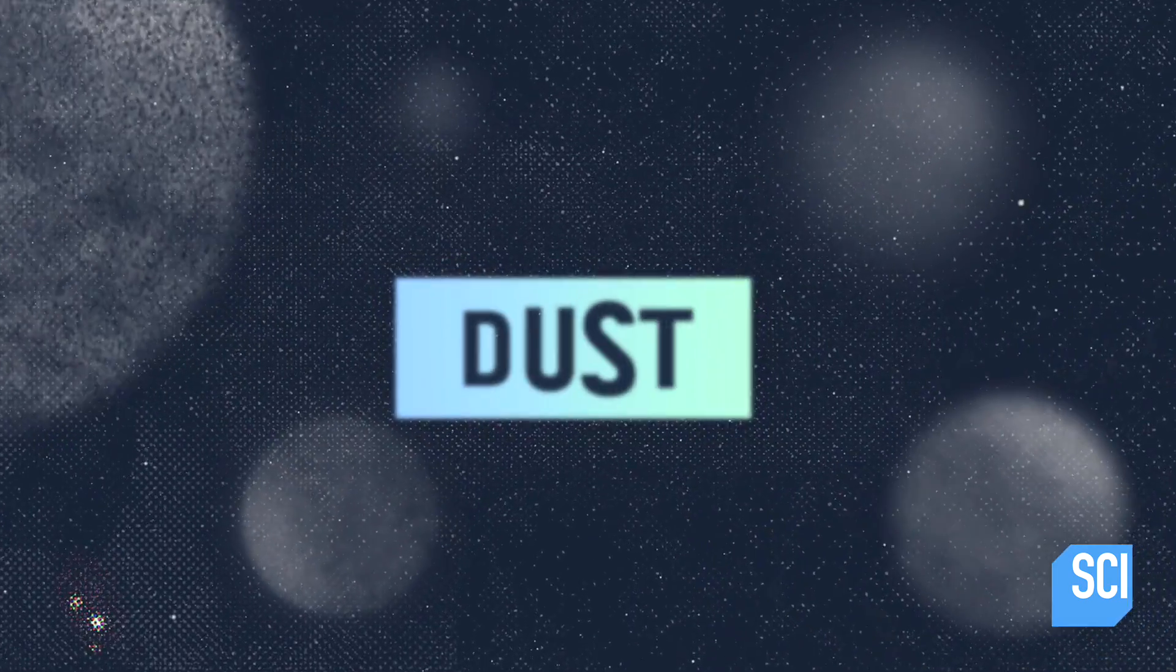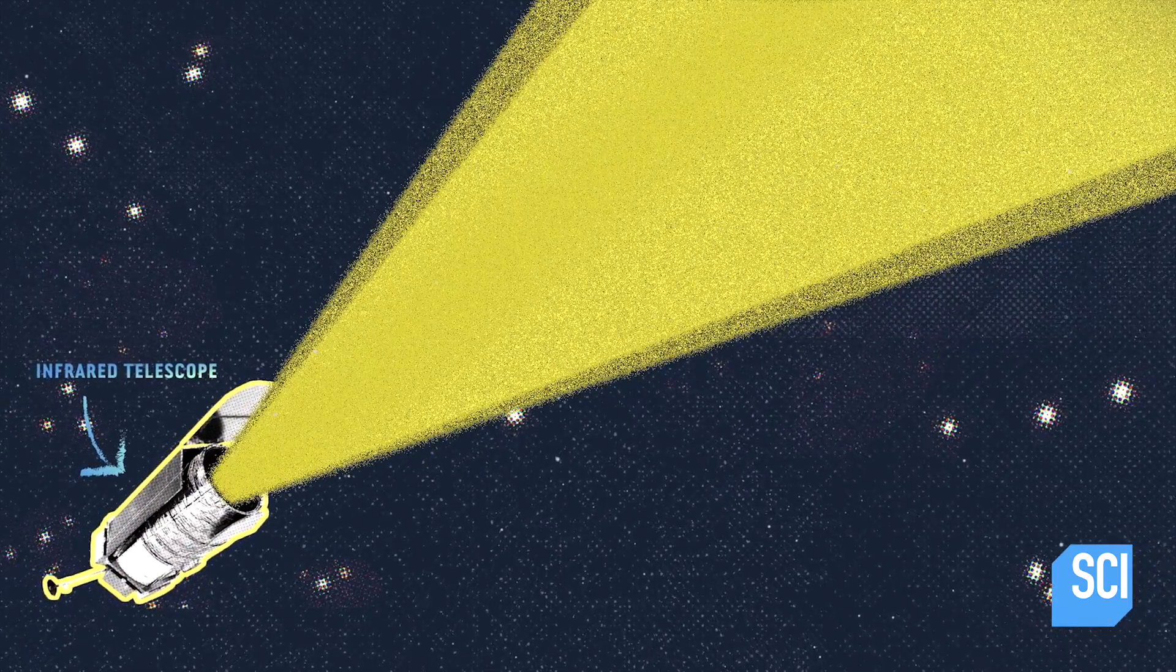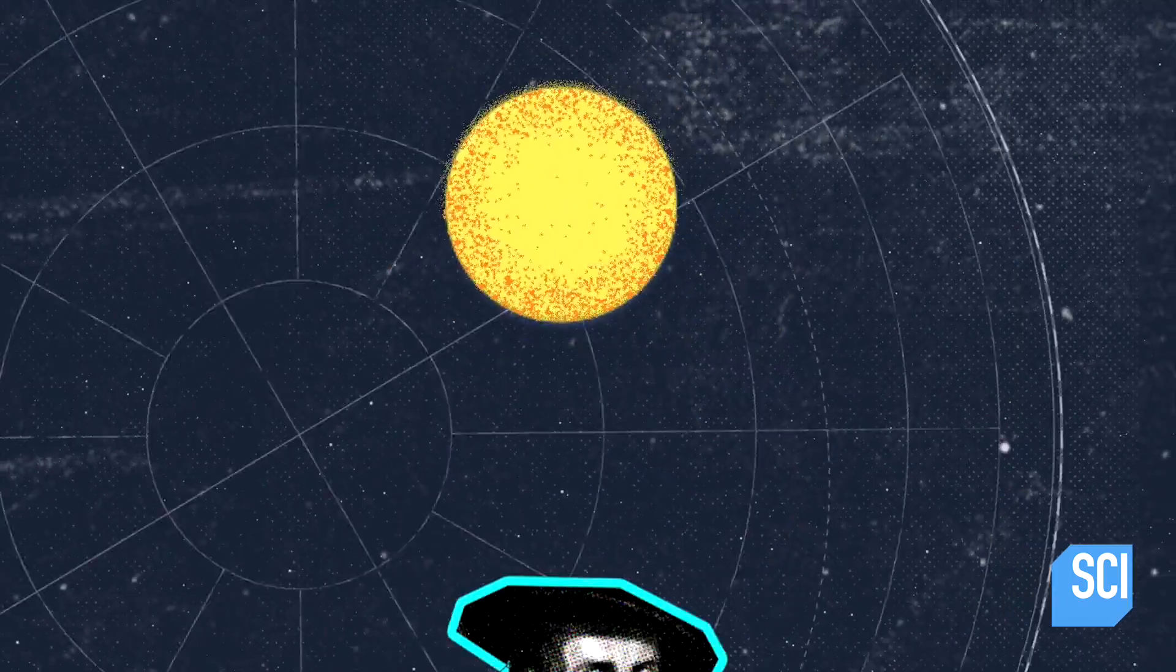This says to us that whatever's blocking is absorbing a lot of the blue light. And we know from physics that the kinds of things that can do this is dust. Dust, a giant cloud of space dust bigger than we've ever seen and only visible with infrared telescopes, could be passing in front of Tabby's star and capturing our imagination.